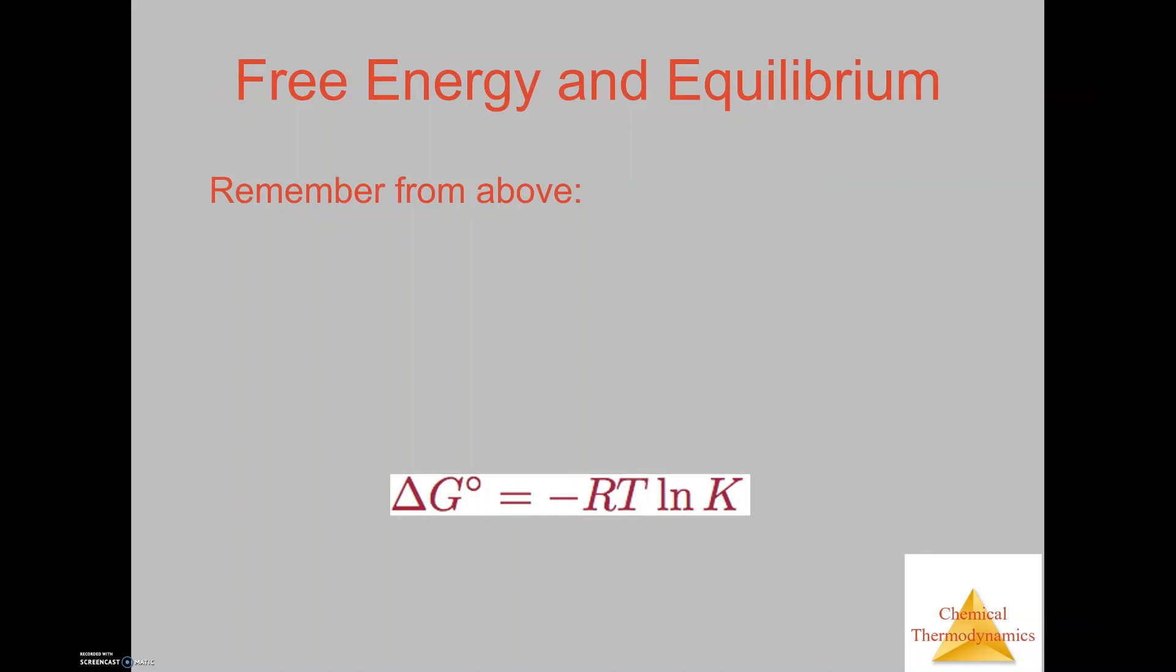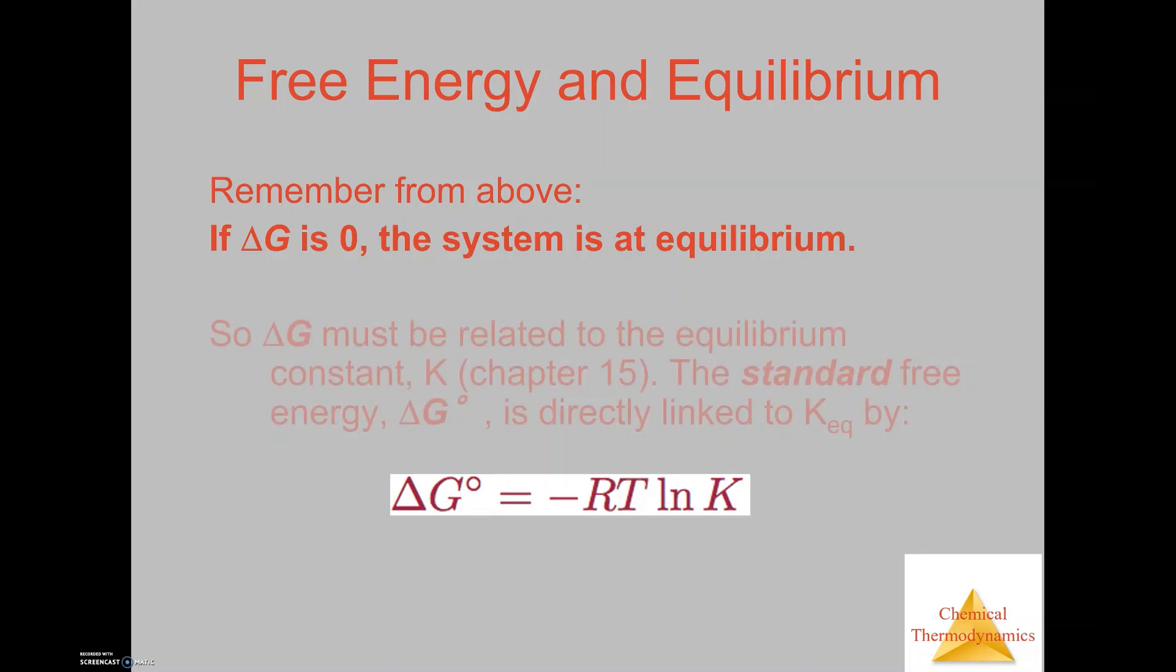Free energy and equilibrium are tied together. If Delta G is zero, the system is at equilibrium. Earlier we talked about Delta G being negative in order for a reaction to be spontaneous, but in this case, if Delta G is zero, we can oftentimes say that this system is at equilibrium. So Delta G must be related to the equilibrium constant K from a previous chapter. The standard free energy, Delta G naught, is directly related to the equilibrium constant through this equation here: Delta G naught equals minus RT natural log of K.